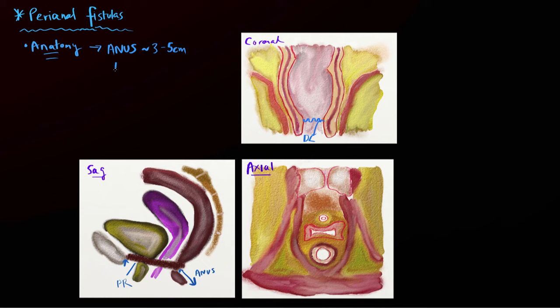The anus is about three to five centimeters in length, and its real role is as a sphincter — making sure that we stay continent. It does that by having two muscles that maintain continence: the internal sphincter (IS) and the external sphincter (ES). The internal sphincter is contiguous with the circular muscles of the anus.